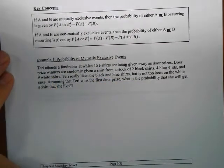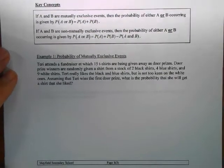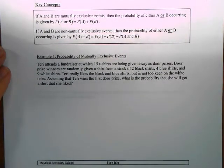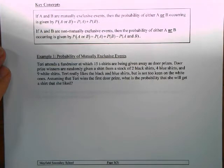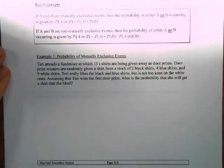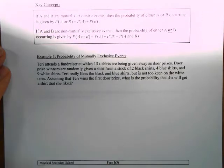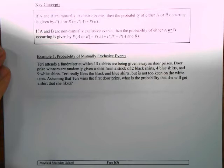Example one: Terry attends a fundraiser at which 15 t-shirts are being given away as door prizes. Winners are randomly given a shirt from a stock of two black shirts, four blue shirts, and nine white shirts. Terry likes the black and blue shirts but not the white ones. Assuming Terry wins the first door prize, what's the probability she will get a shirt she likes? That means we want to find the probability she gets a black or a blue shirt.